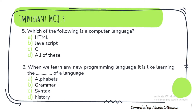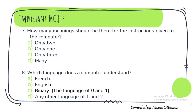Question 5: Which of the following is a computer language? All of these — that is HTML, JavaScript and C language. All of these are computer languages. Question 6: When we learn any new programming language, it is like learning the grammar of a language. Question 7: How many meanings should there be for the instructions given to the computer? There should be only one meaning.